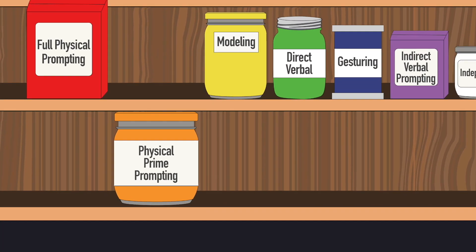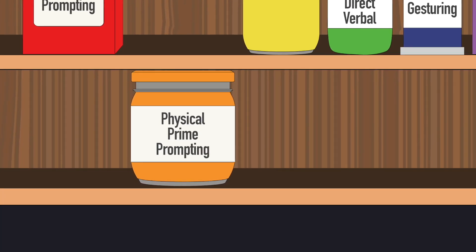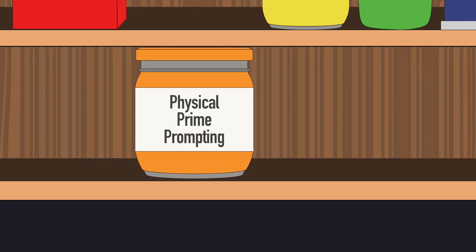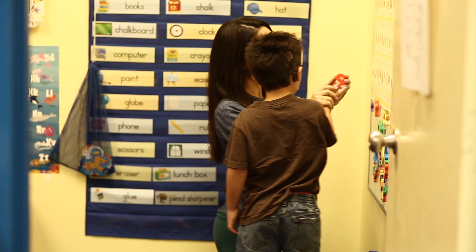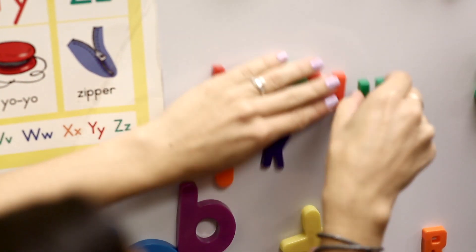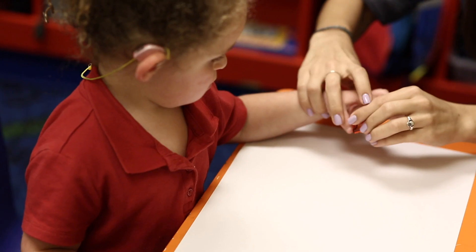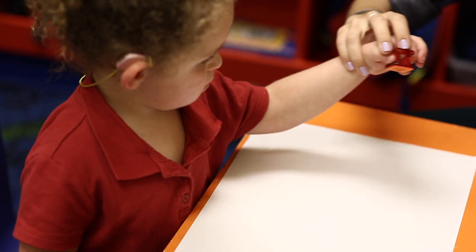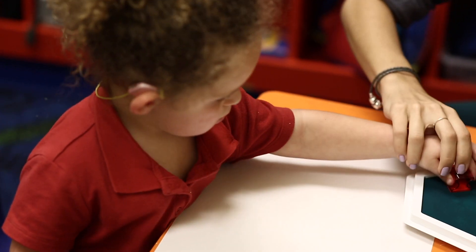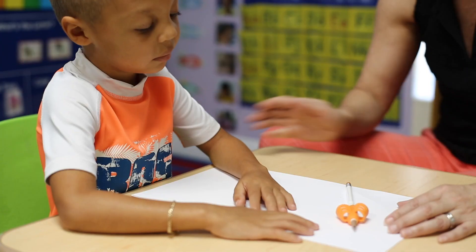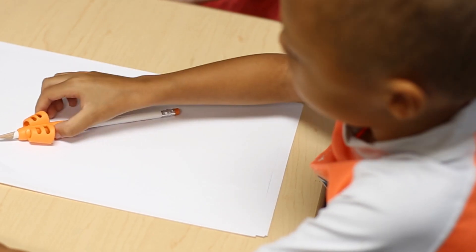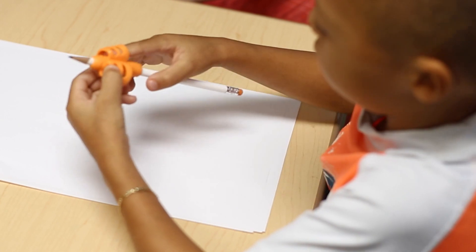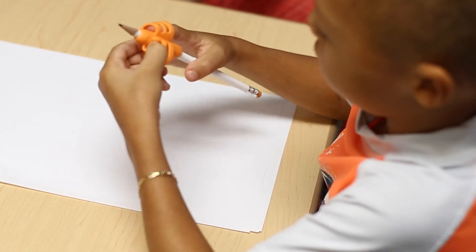Physical prime prompting: the child performs the task after the teacher moves them toward it. This includes teacher proximity, support at the elbow, and hand-over-hand. For example, the teacher touches their elbow to get them to pick up a pencil grip or magnet to spell out their name.